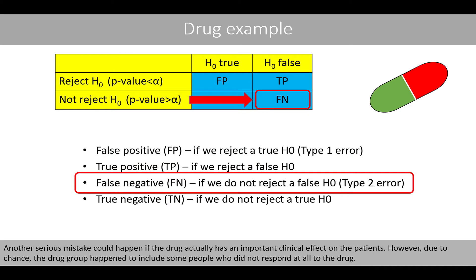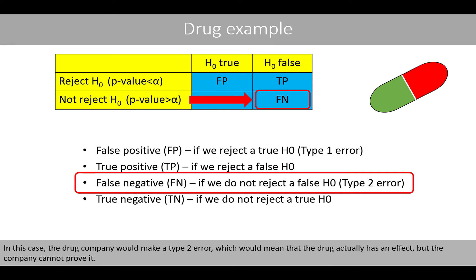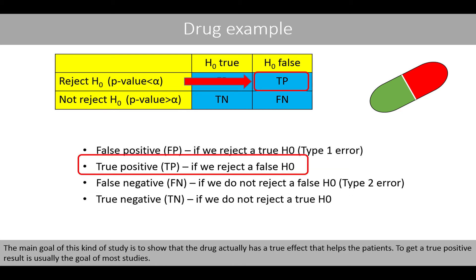Another serious mistake could happen if the drug actually has an important clinical effect. However, due to chance, the drug group happened to include some people who did not respond at all to the drug. In this case, the drug company would make a type 2 error — the drug actually has an effect, but the company cannot prove it. This would mean they have wasted time and money developing the drug, and patients will not get their drug even though it might be helpful. The main goal of this kind of study is to show that the drug has a true effect that helps the patients — getting the true positive result is usually the goal of most studies.